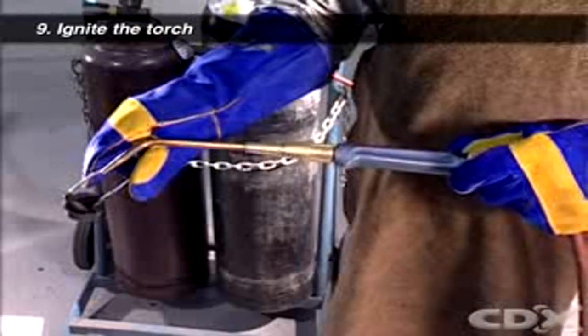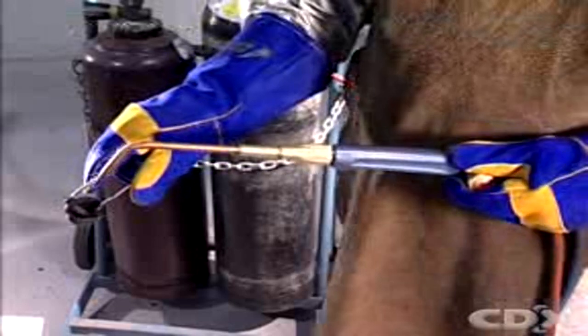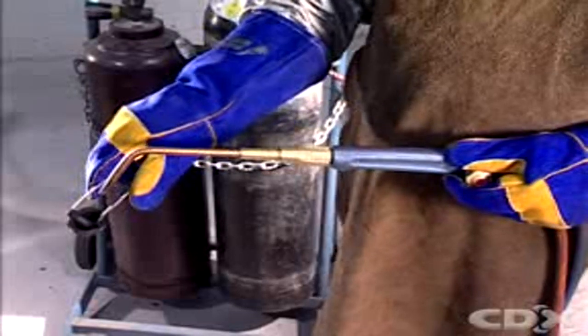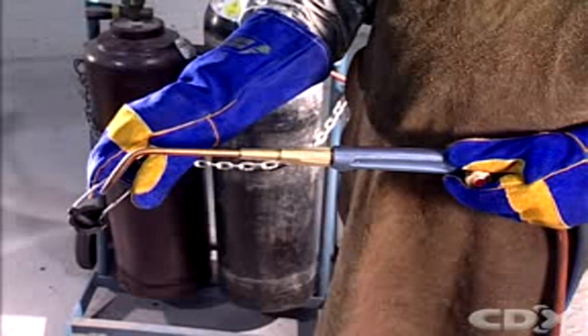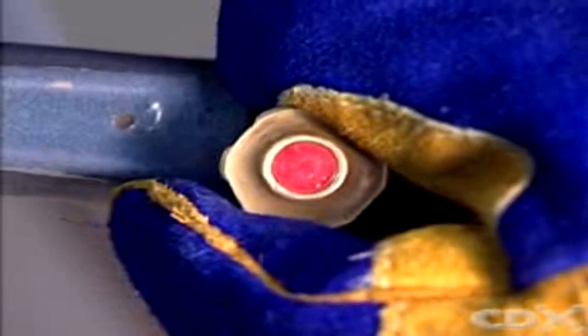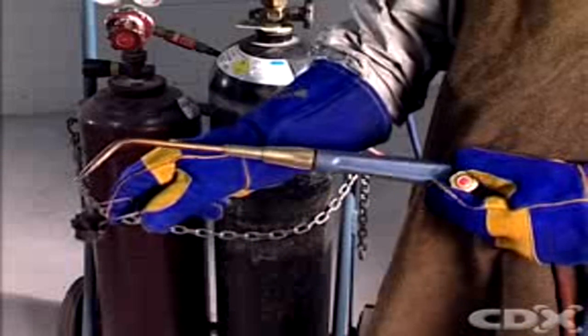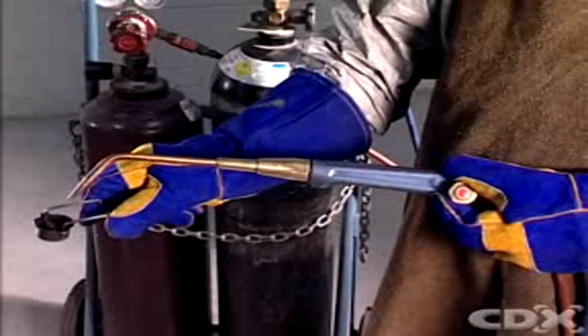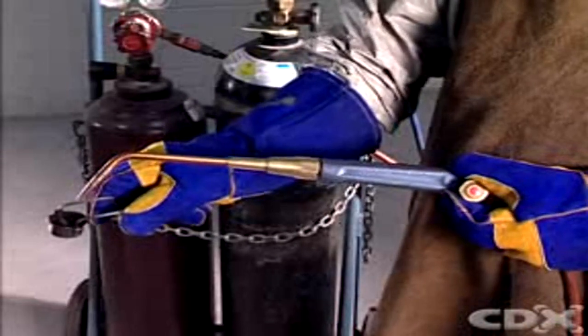Now you are ready to ignite the torch with the striker. The tip of the torch must be pointing downwards away from your body and away from the gas cylinders. Turn the acetylene valve on the torch handle slightly towards the on position. You should hear the gas hissing.